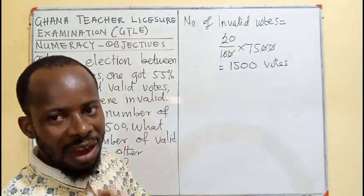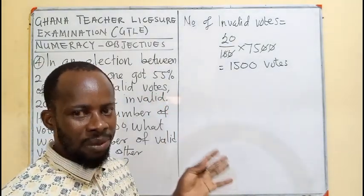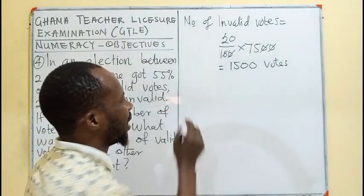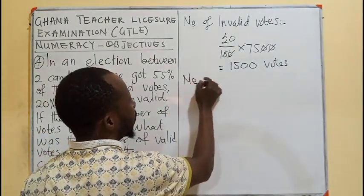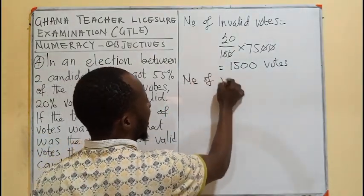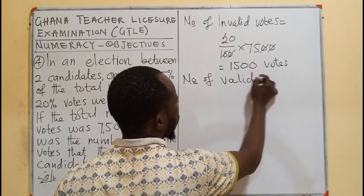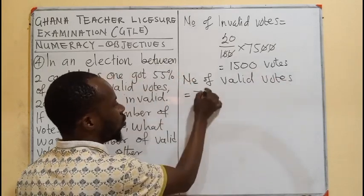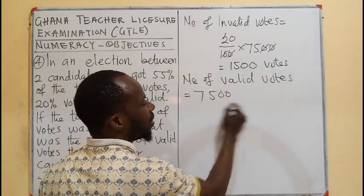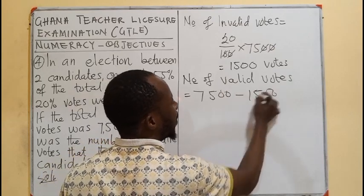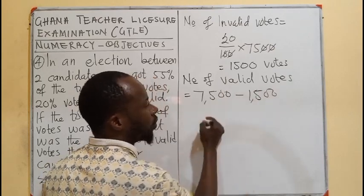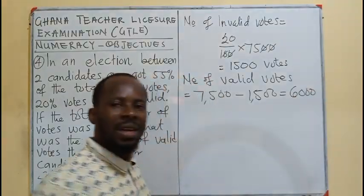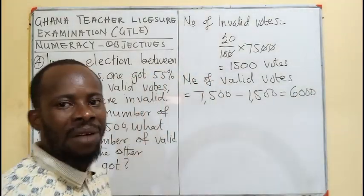Either they don't meet the requirement to be counted. Then, if that is the invalid count, the number of valid votes is the total number of votes cast minus the invalid number of votes, and that gives us 6,000 valid votes.